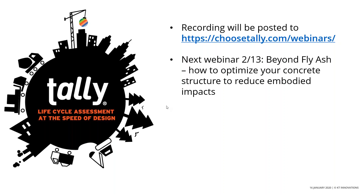EC3 provides a benchmark figure within each category, so from our perspective that would probably be the perfect mechanism for writing a carbon performance specification. We definitely see a big role for contractors because they're the ones actually putting the stuff in the building. In our own projects at CarneyTimberlake, we've seen situations where substitutions for materials defined within a Tally run have been proposed that would potentially undermine the embodied carbon reduction targets we've established. We see EC3 as a great mechanism for maintaining that fidelity of intent.